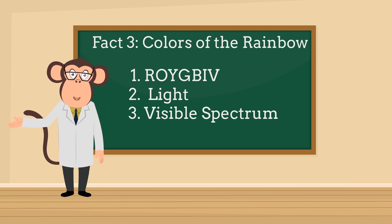Fact 3: Colors of the rainbow. Colors are everywhere, and they're more than just pretty. Check this out. Roy G. Biv: Red, orange, yellow, green, blue, indigo, and violet make up the rainbow. Light: When sunlight passes through water droplets, it bends and creates this magical spectrum. Visible spectrum: Our eyes can see these colors, but did you know there are colors beyond our sight, like ultraviolet and infrared?